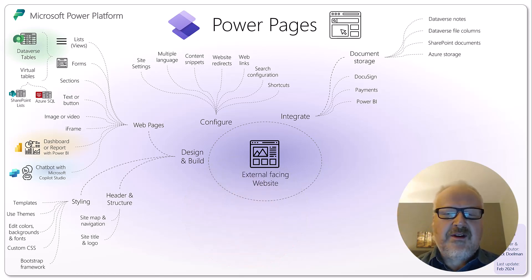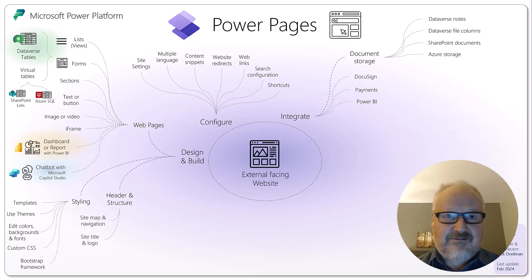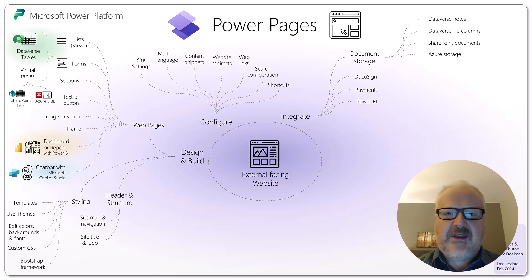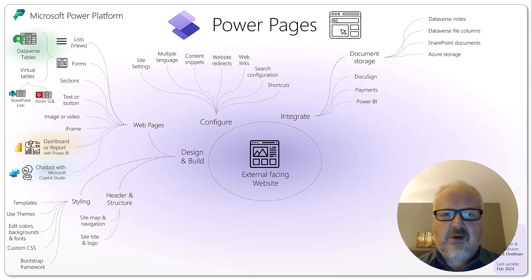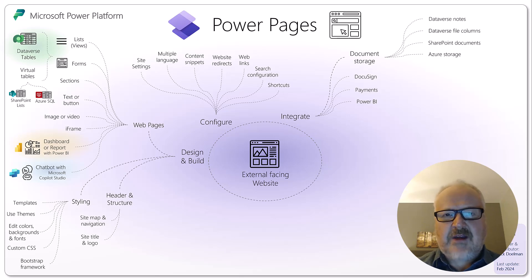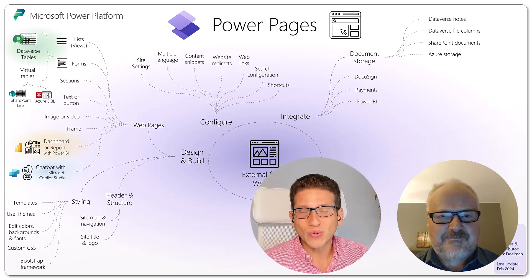Nick explains the Payments integration, which is currently in preview. It allows you to sell services using Power Pages — such as event registrations or donations — via a Stripe payment page. Once payment is completed, a token is sent back confirming whether the payment went through, allowing you to update your order or registration. The money then shows up in your bank through regular Stripe configuration outside of Power Pages.